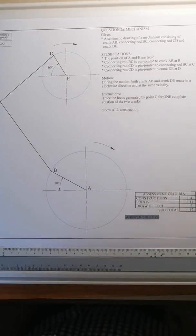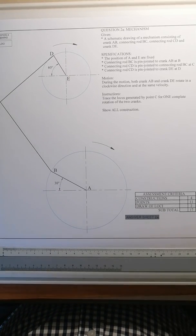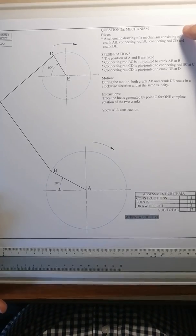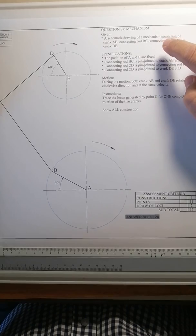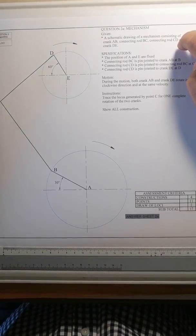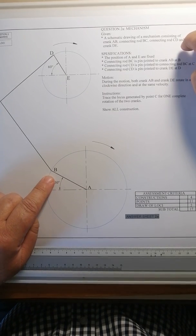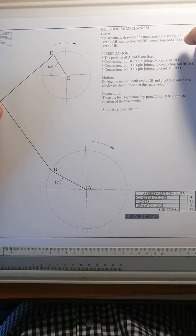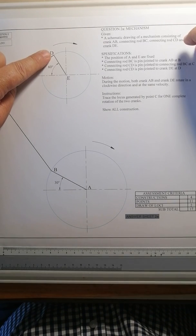Good afternoon. Today's lesson is on mechanisms. This is one of our exam questions that I'm going to discuss with you. Question 2a says that a schematic drawing of a mechanism consisting of a crank AB is given. This crank AB has a connecting rod BC and connecting rod CD and another crank DE.